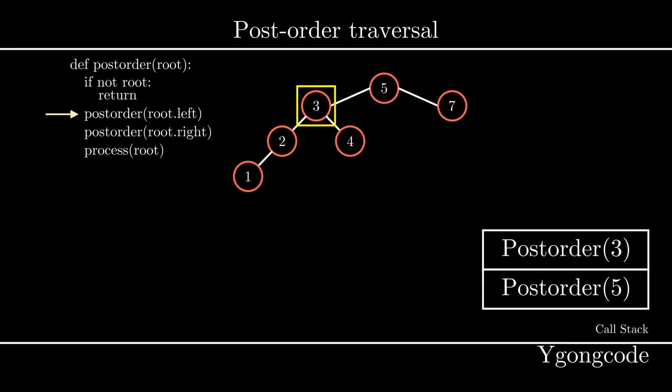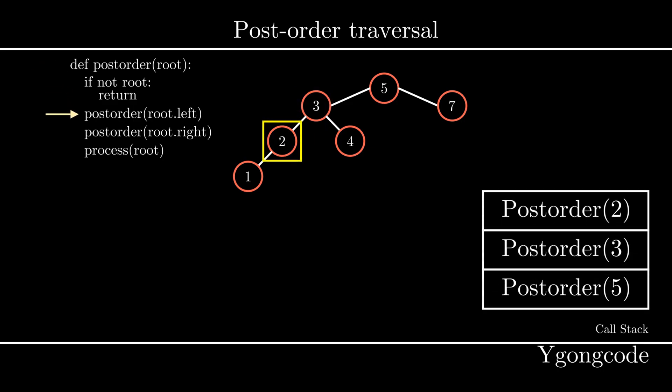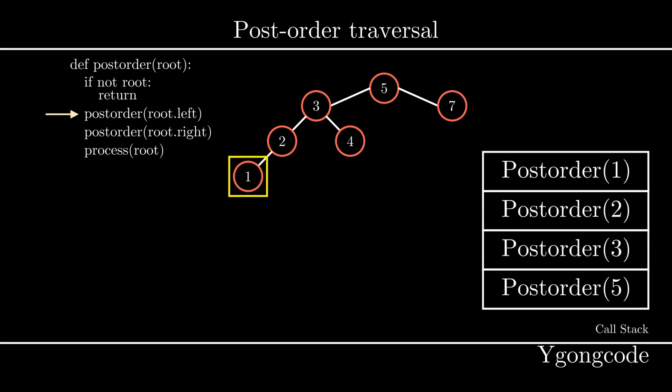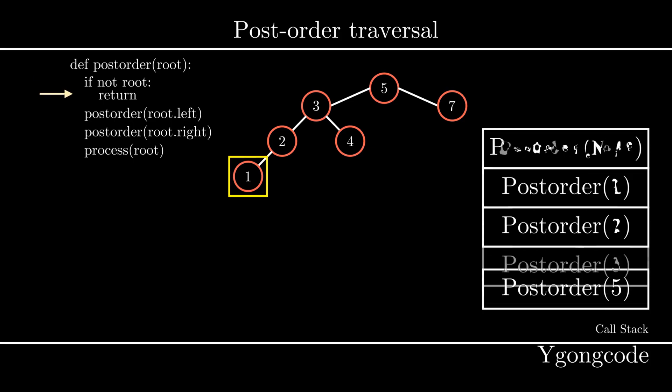On our next execution, we execute post-order(3) since it is on top of the call stack. At post-order(3), we continue to traverse its left subtree node 2, pushing post-order(2) onto the call stack. At post-order(2), we traverse its left subtree node 1 and push post-order(1). At post-order(1), we want to traverse its left subtree, which is empty but still valid, so we push post-order(None) onto the call stack.